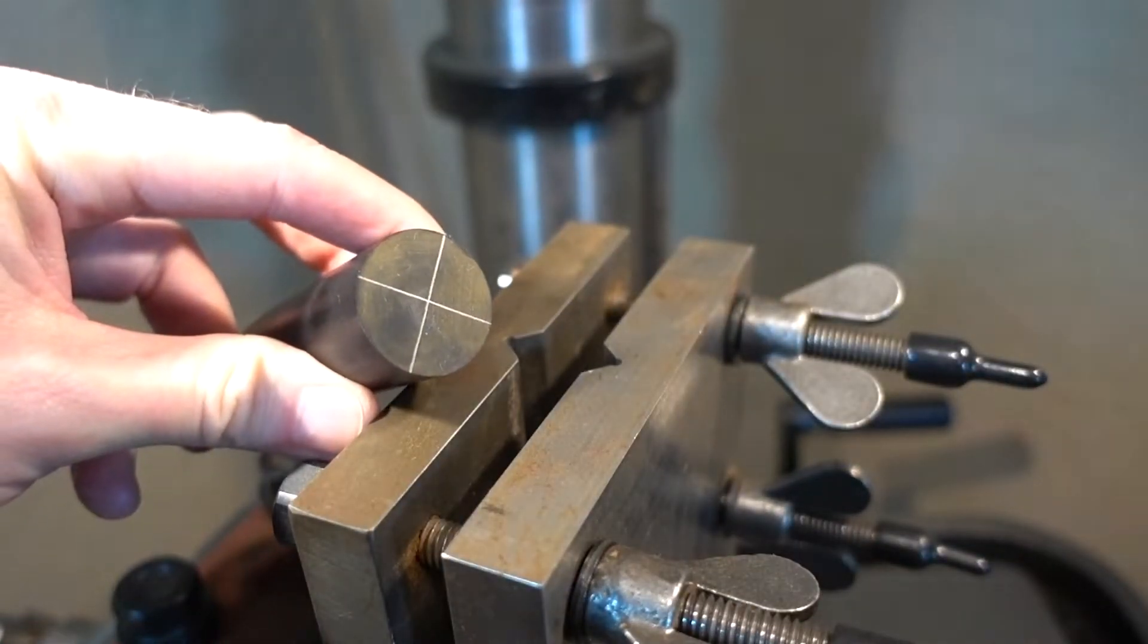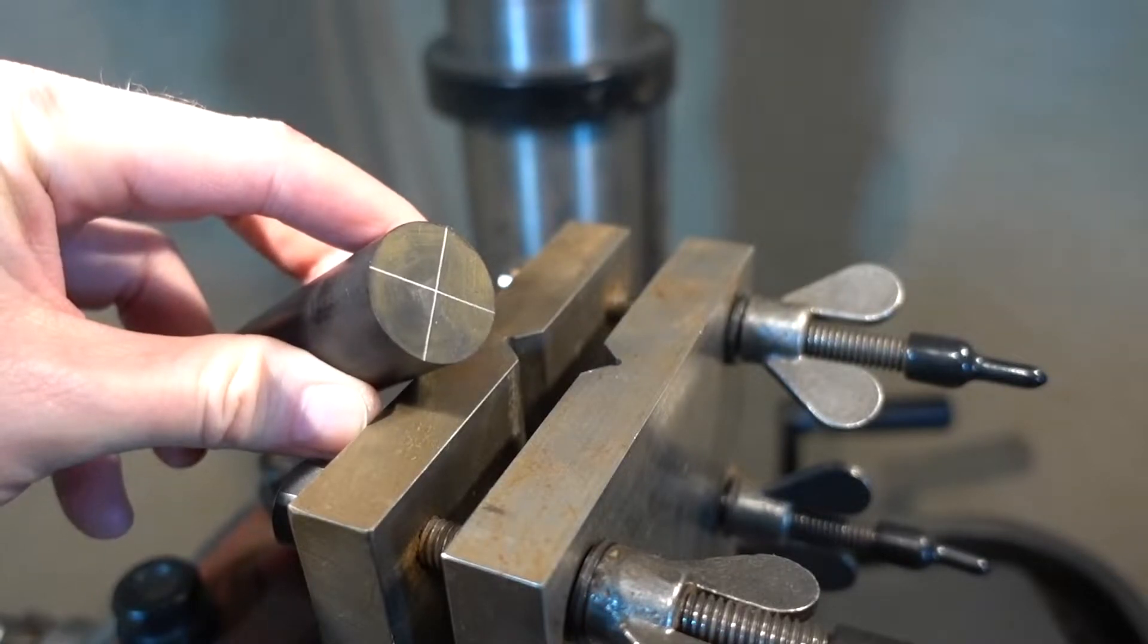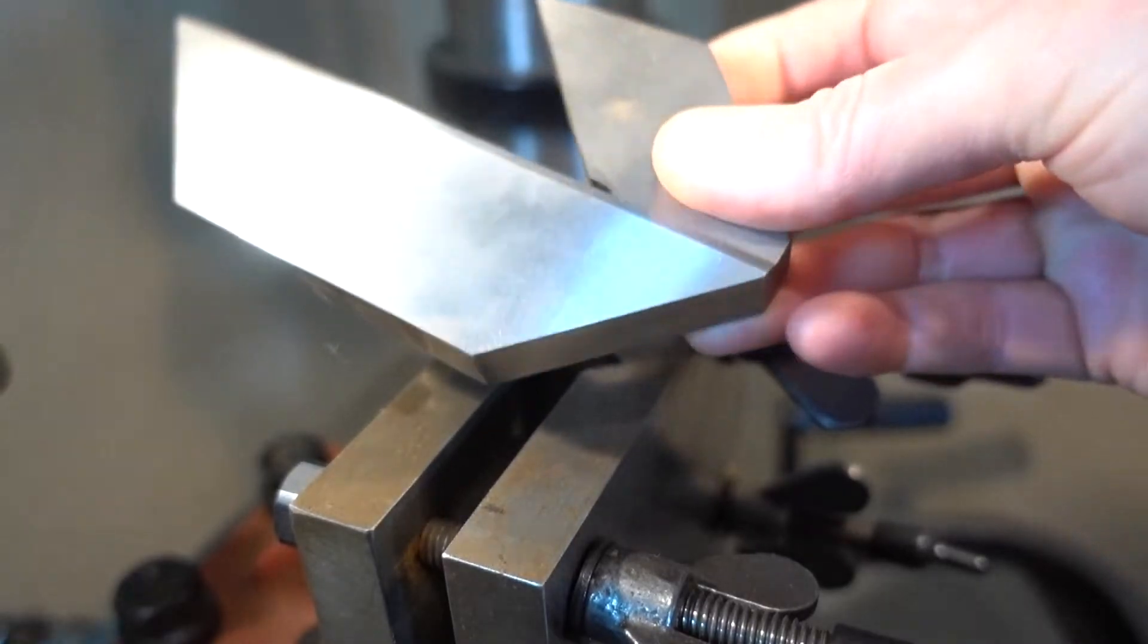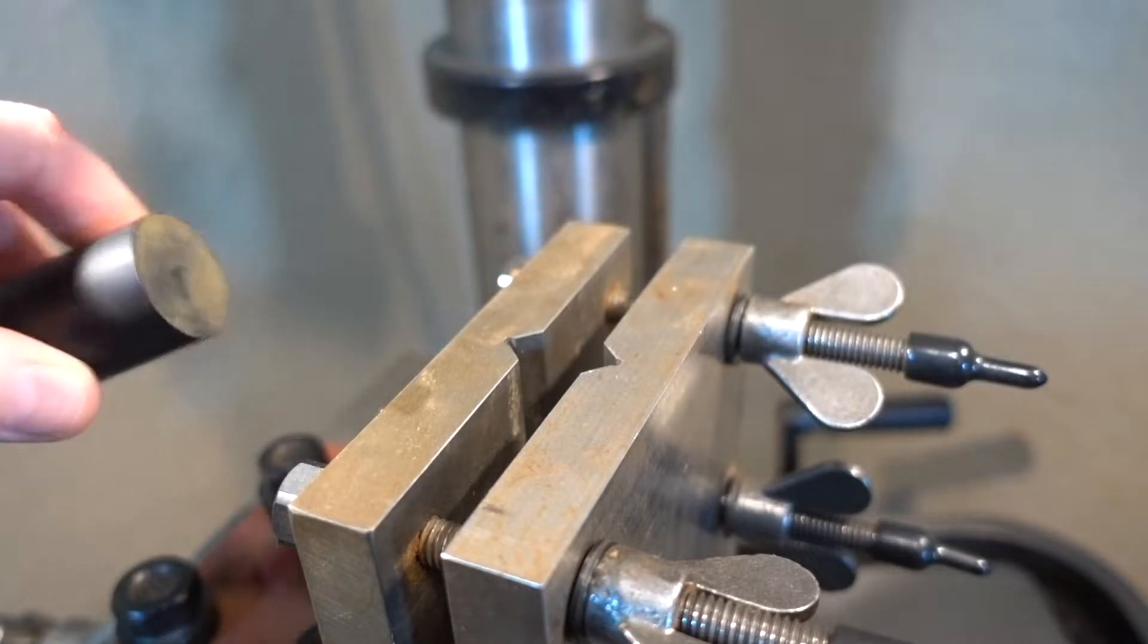I used what's known as a center finder. You can see the silver lines, those are just pencil marks. This is known as a center finder, the type of thing that you would need if you use a drill press.